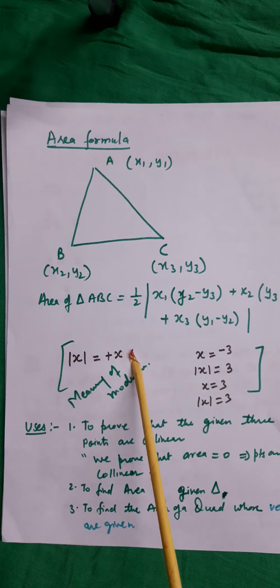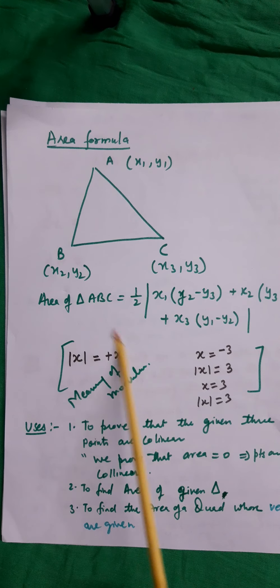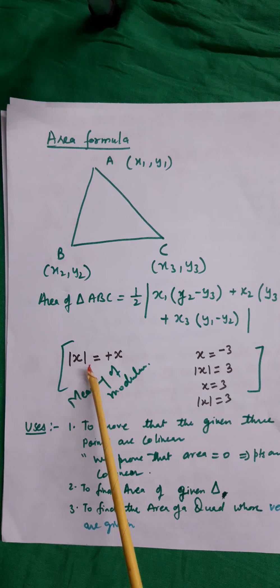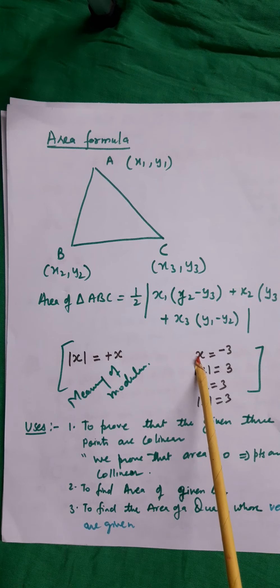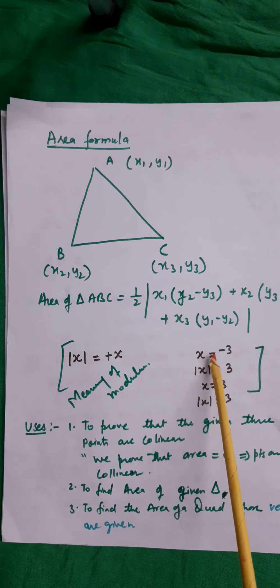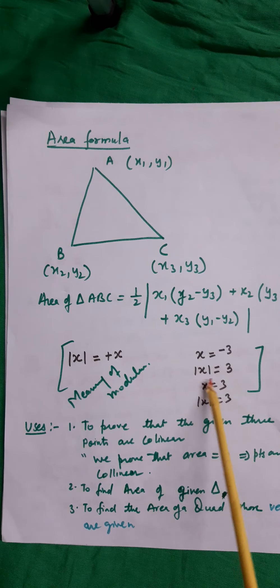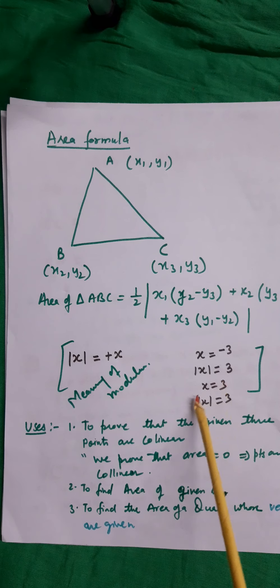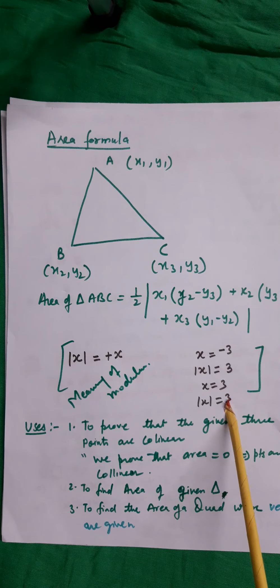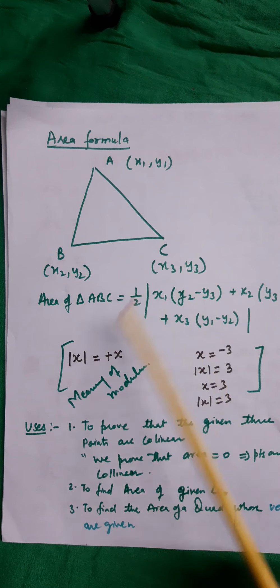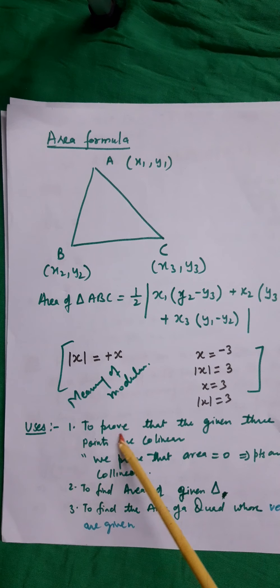What is the meaning of this modulus sign? This modulus sign means that only the positive value of the number comes out of it. That is, modulus of x is always positive x. If x is equal to minus 3, then modulus of x will be 3, and if x is equal to 3, then also the modulus is 3.